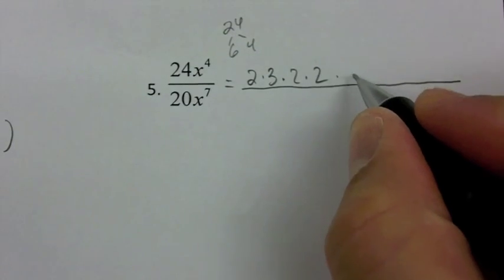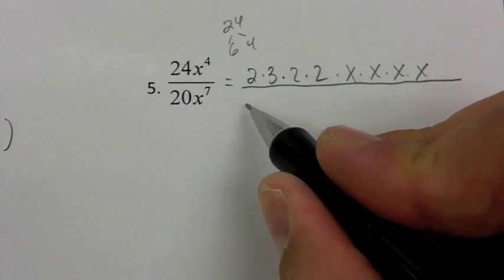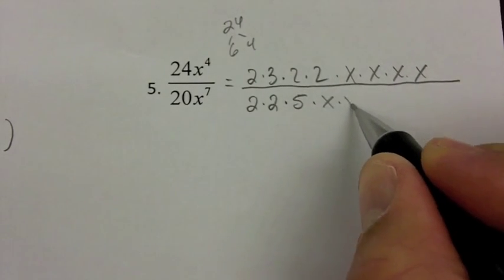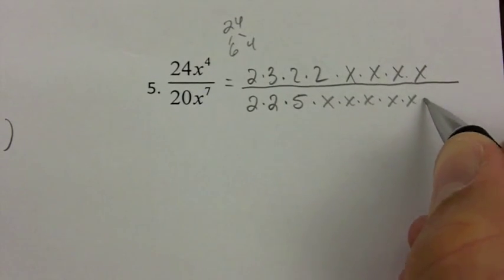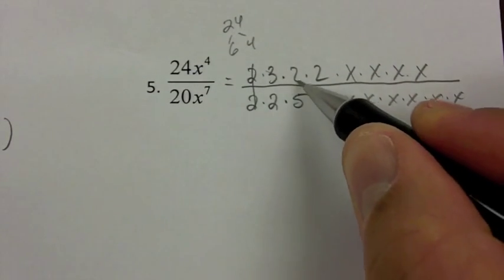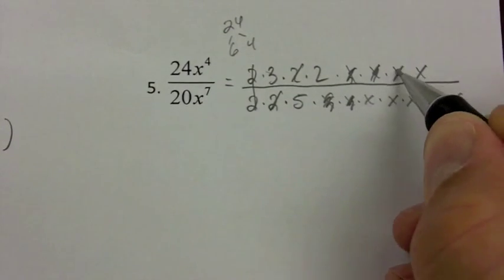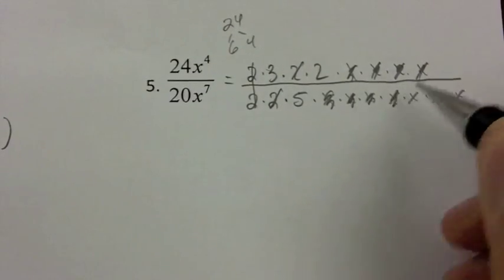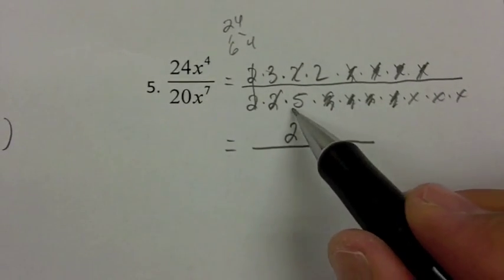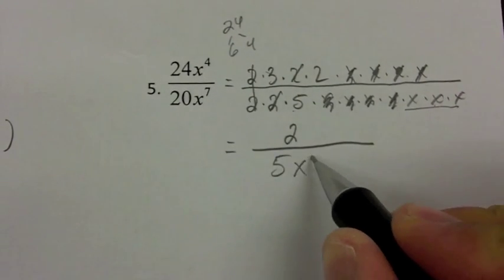For x to the 4th, there are 4 x's, so I write out 1, 2, 3, 4. For the denominator, 20 is 4 times 5 — there's 4, and 5 is prime. Then there are 7 x's. Now I'm going to divide out the common factors: a common factor of 2, another common factor of 2, and common factors of x — four of them. What's left in the numerator is just a 2, and in the denominator I have a 5 and 3 x's, so that's 5x to the 3rd.